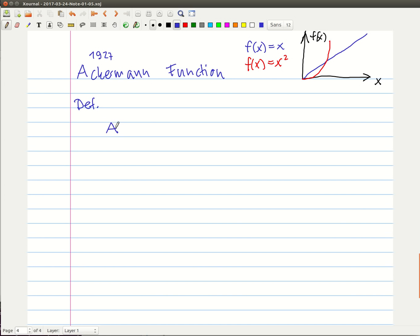So Ackermann function is represented as an A. Ackermann of N, M is defined as... But first, I want to point out which values these arguments can take.